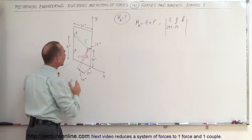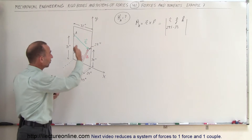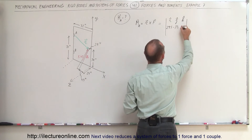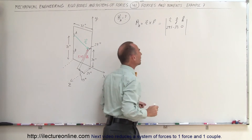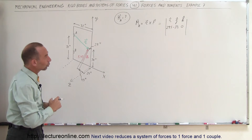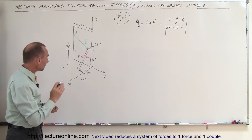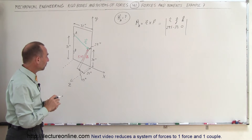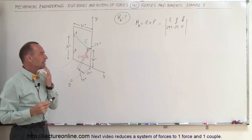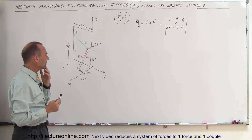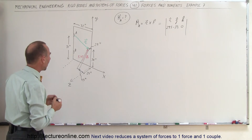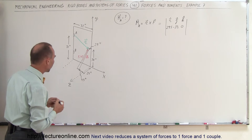In the Z direction, we get 0 because the position vector lies along the XY plane. Now for the components of the force, we need to find the direction cosines of the force vector.